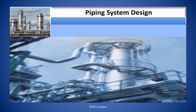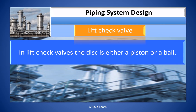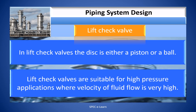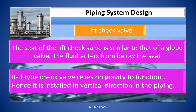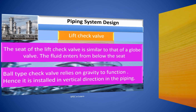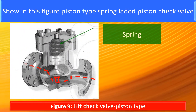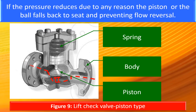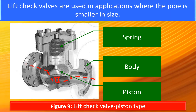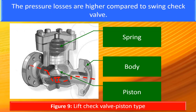In lift check valves, the disc is either a piston or a ball. Lift check valves are suitable for high-pressure applications where the velocity of the fluid is very high. The seat of the lift check valve is similar to that of a globe valve, and the fluid enters from below the seat. The ball-type check valve relies on gravity to function and is installed in a vertical direction in the piping. Once the minimum fluid pressure is attained, the pressure lifts the disc and allows liquid to flow. If the pressure reduces for any reason, the piston or ball falls back to the seat, preventing flow reversal. Lift check valves are used in applications where the pipe is smaller in size; pressure losses are higher compared to the swing check valve.